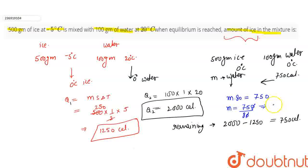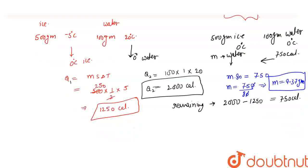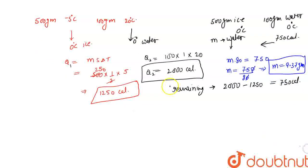So m value is 9.37 grams. The remaining 750 calories converted 9.37 grams from the 500 gram ice to water. At equilibrium, I had 500 gram ice, from that 9.37 went away. So 500 minus 9.37 remains, which is 490.63.